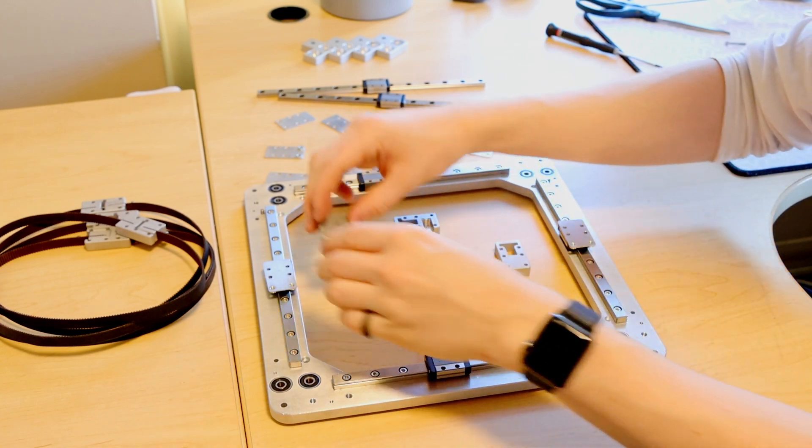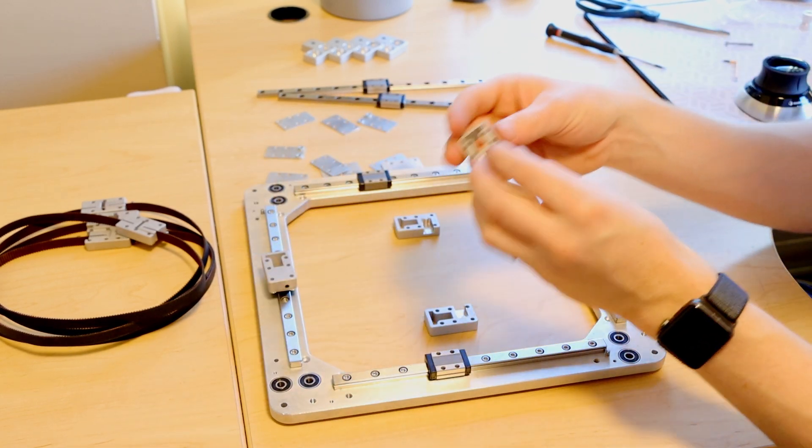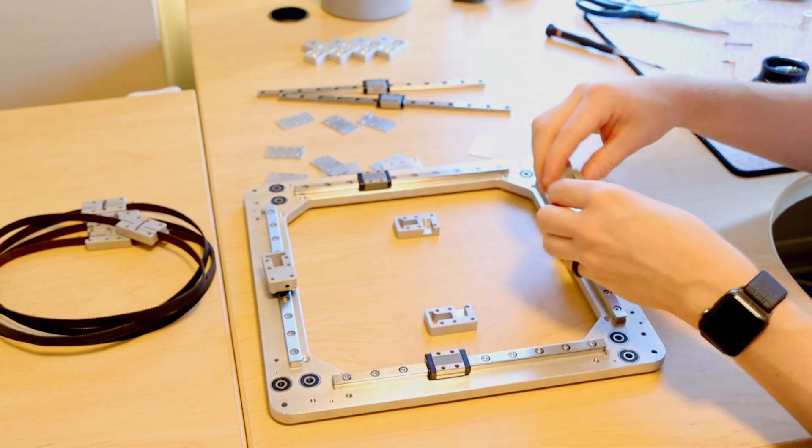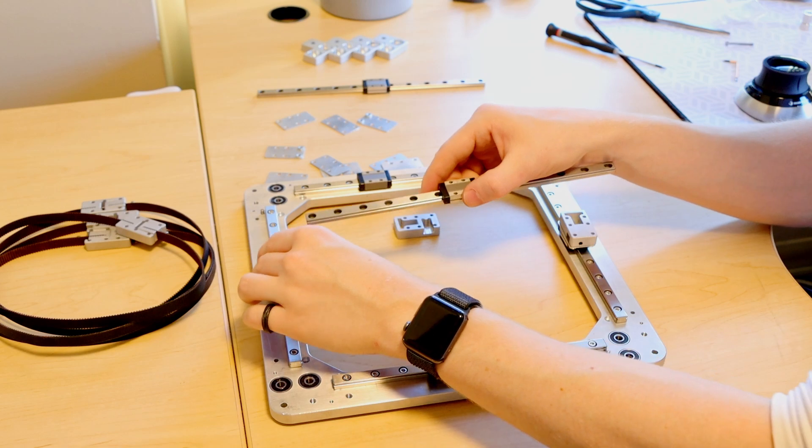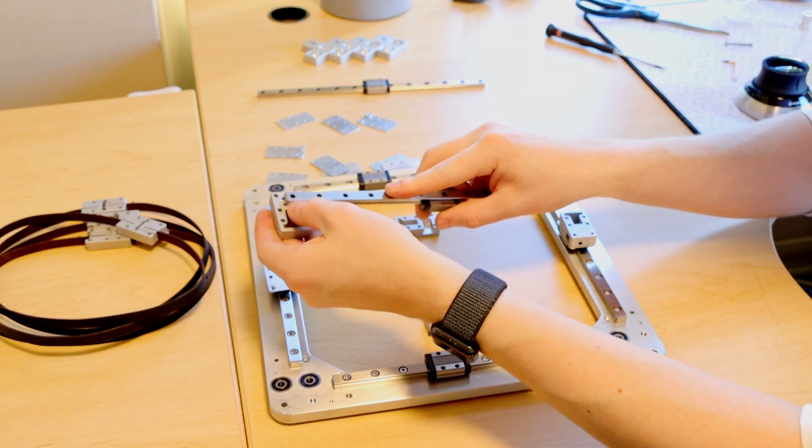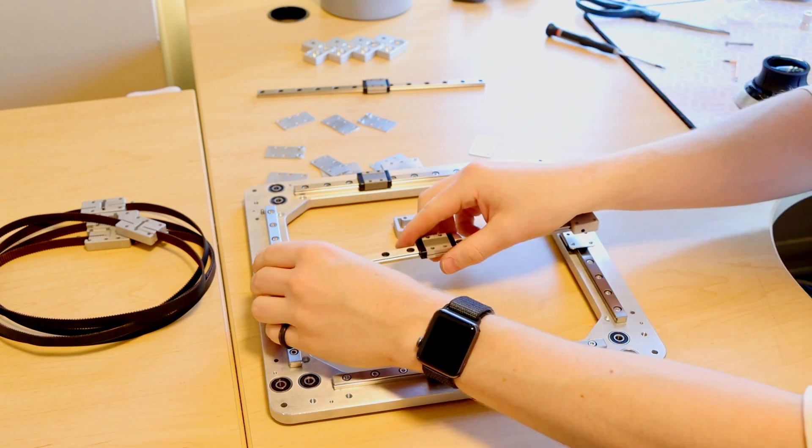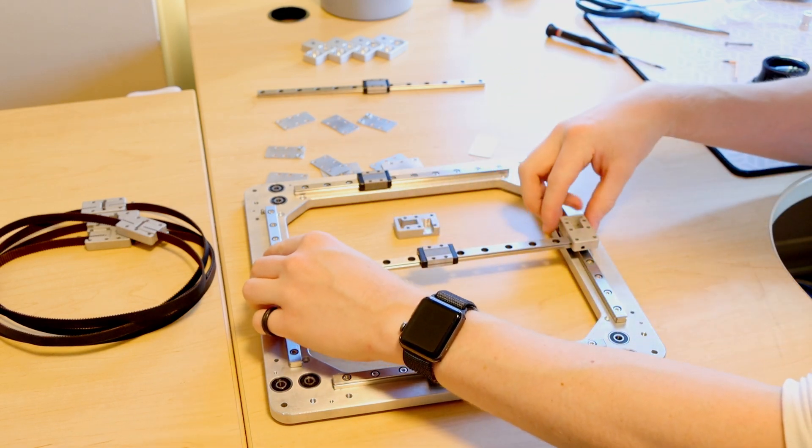Then we're going to put these two blocks which hold the actual crossrail on top and now one of these cross rails needs to go in these blocks. So we can start by pressing it in and that then goes just like that.